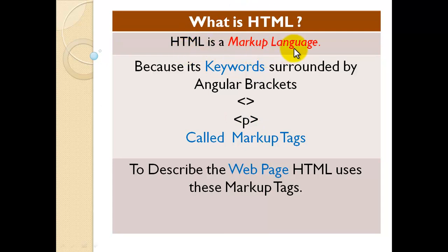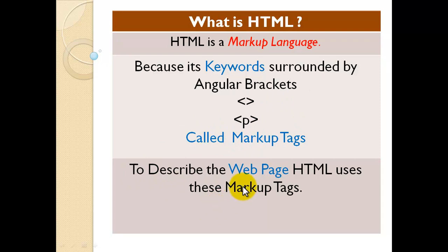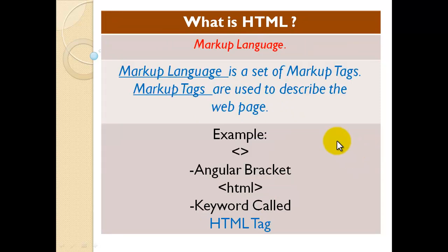HTML is a markup language. In a markup language, the keywords are surrounded by angular brackets. This is called a markup tag. To describe a web page, HTML uses these markup tags. Markup language is the set of markup tags, and markup tags are used to describe the web page. The angular brackets contain the HTML keyword, and together this is called an HTML tag.